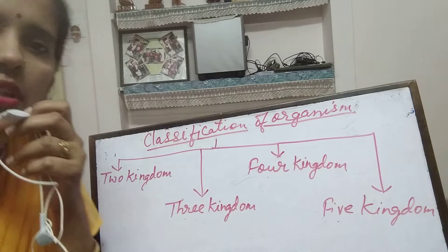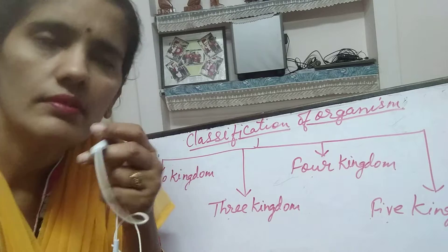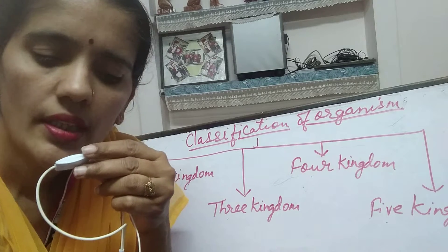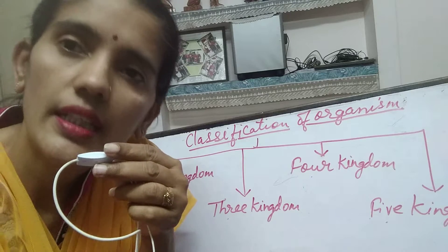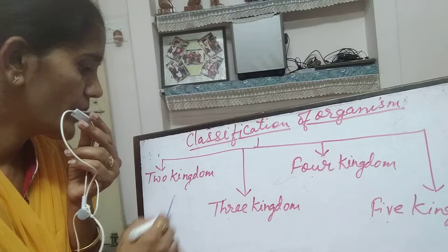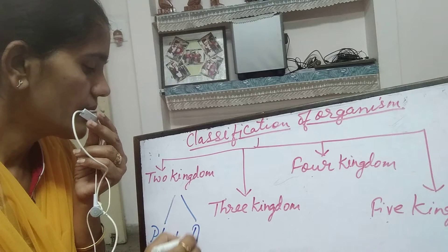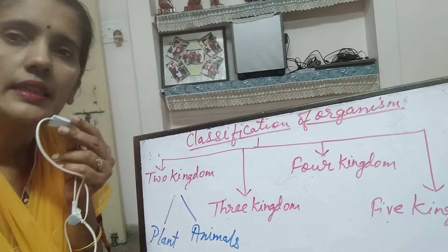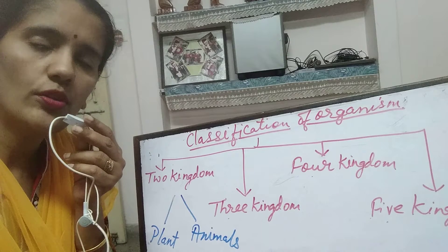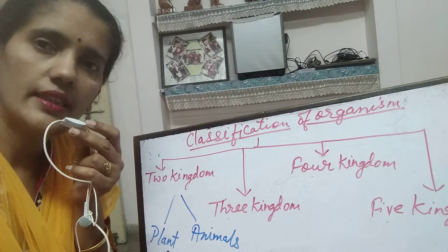Two kingdom classification was given by Aristotle and Carolus Linnaeus. By the time of Aristotle, he divided living organisms into two kingdoms: one is plant and the other is animal. Carolus Linnaeus also divided organisms into plants and animals — he gave the name Animalia for animals and Vegetabilia for plants.